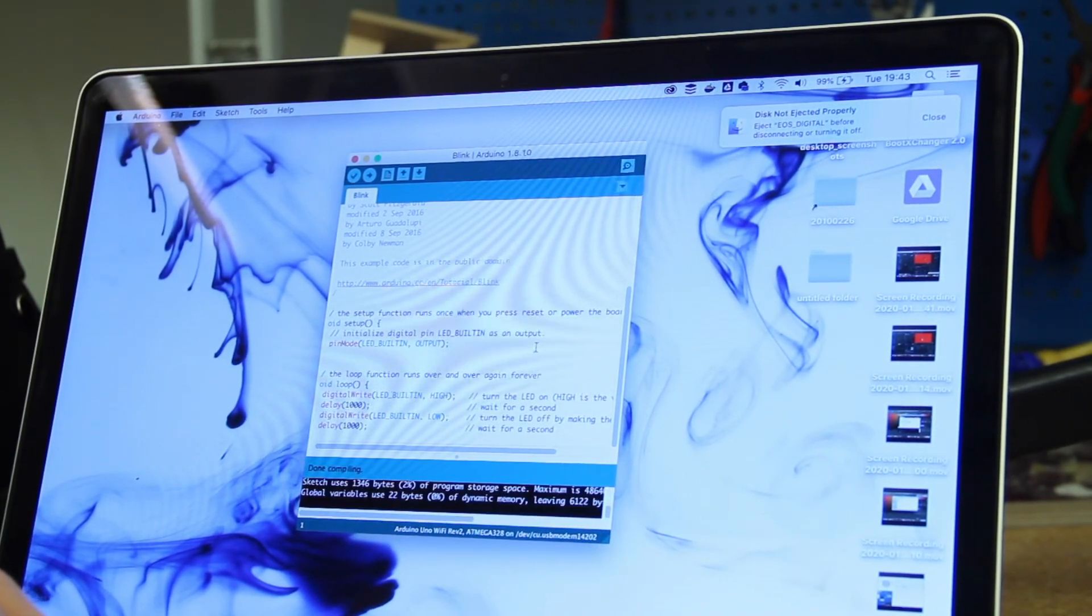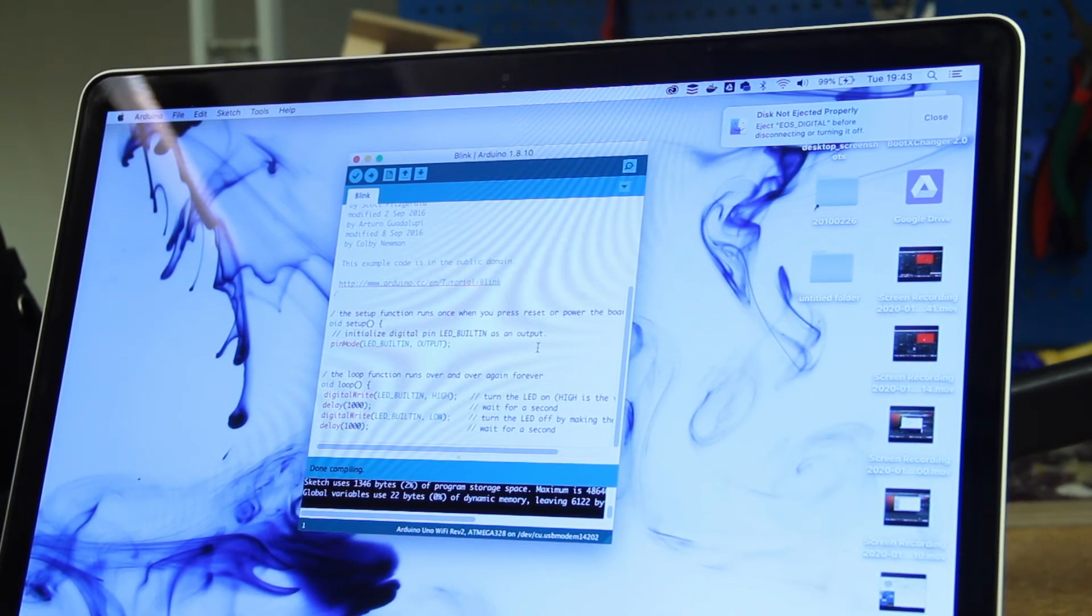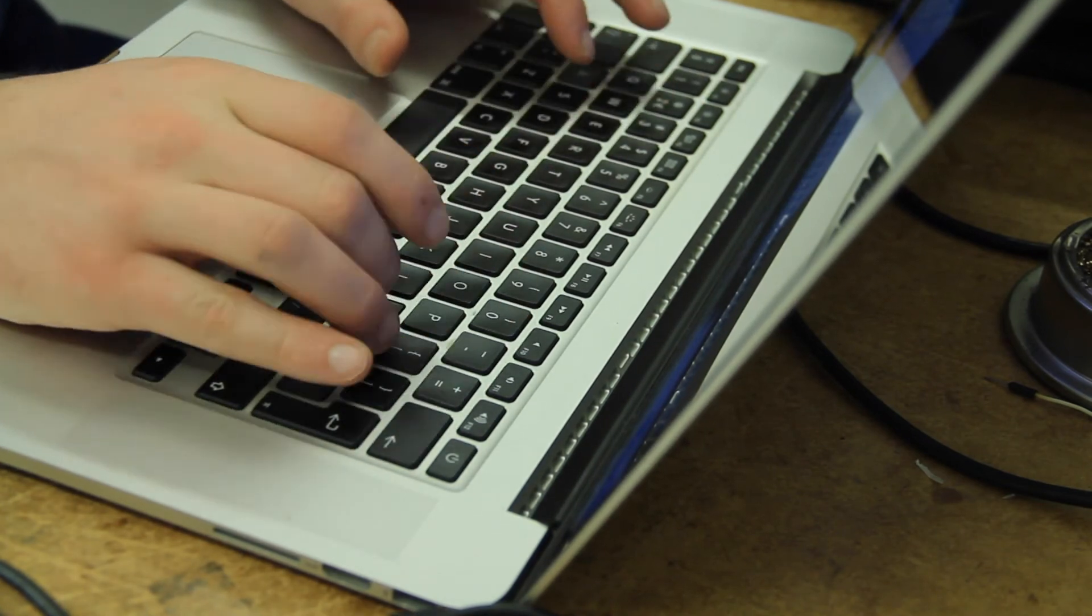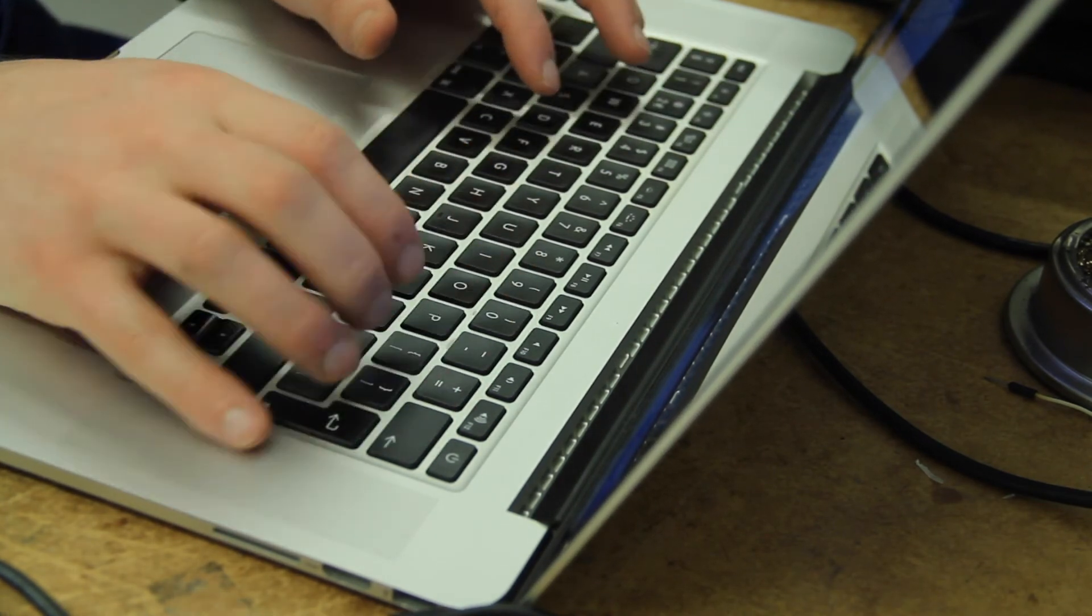Take for example a blinking LED, which is easy in code. Code is almost made for this type of solution. But when we want to create more expressive behavior, we have to work really hard.